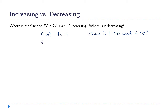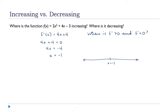The places where the derivative potentially changes from positive to negative are the places where it equals zero. So I'll set f' equal to zero and solve: 4x equals negative 4, so x equals negative 1. That's where f' equals zero. Now I'll draw a number line and put that transition point on it, picking x equals 0 on the right and x equals negative 2 on the left.